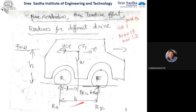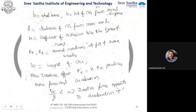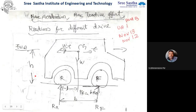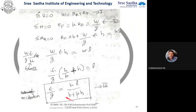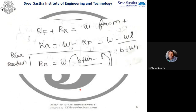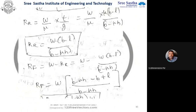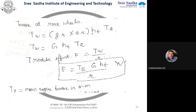Here, b stands for wheelbase, h stands for height of CG from the ground, and c gives the distance of CG behind the front axle — that is b minus l. To find l, subtract that term. You can recap the formulas: front wheel acceleration can be found from one formula, and from that you can find the reaction force and tractive force for each drive configuration.